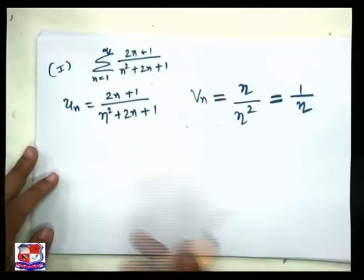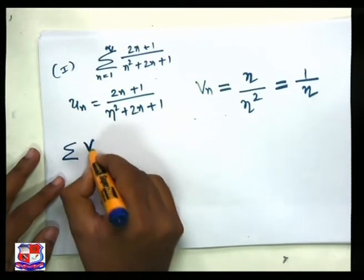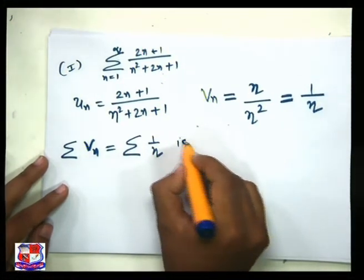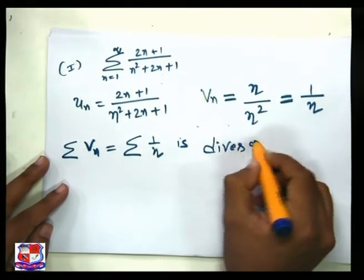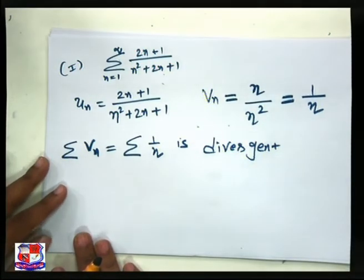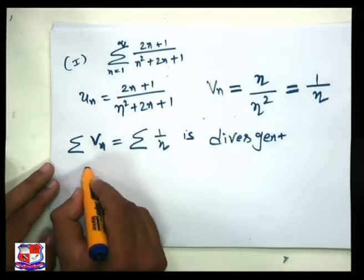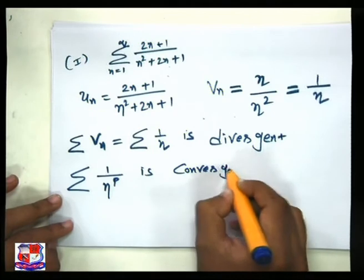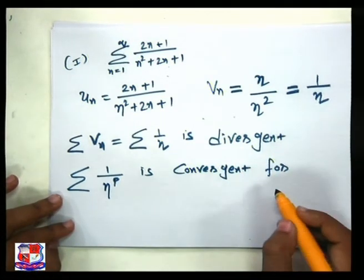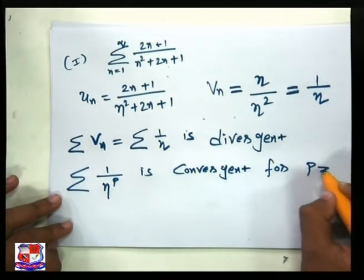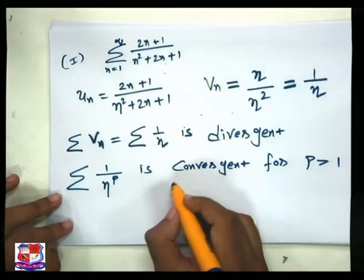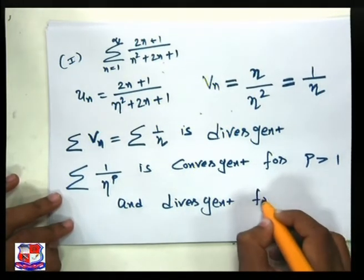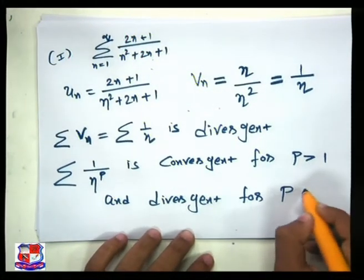The series summation vn equals summation 1/n. Now, this series is divergent. Why? Because we have one important result: summation 1/n^p is convergent for p greater than 1, and divergent for p less than or equal to 1.